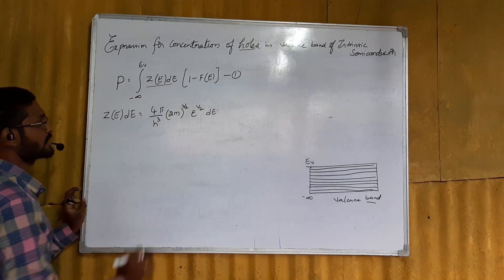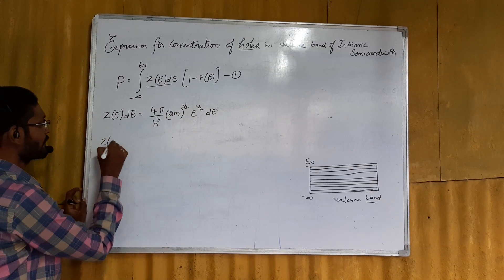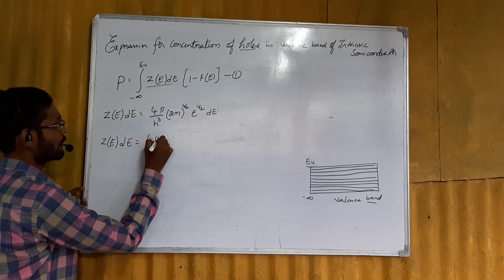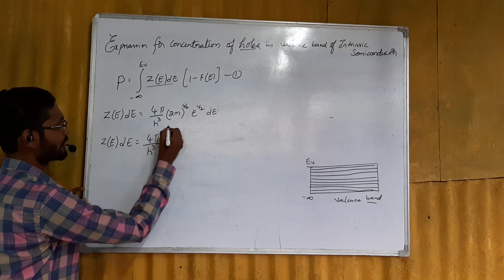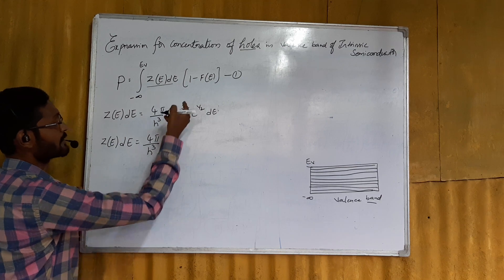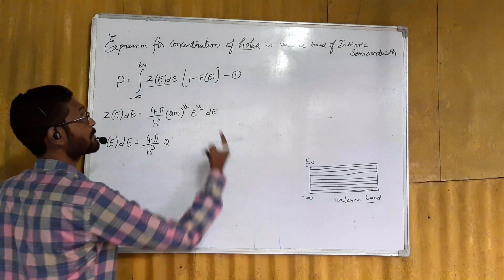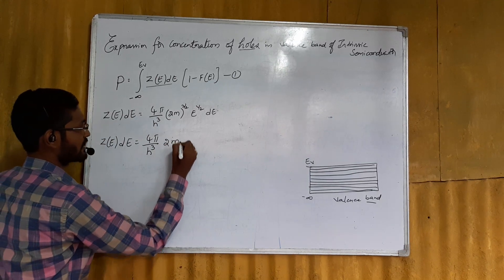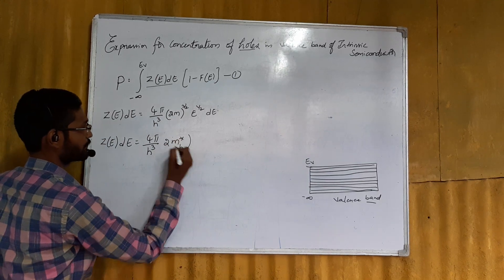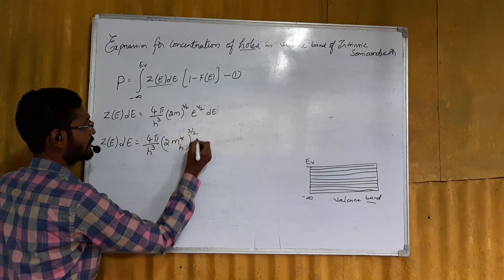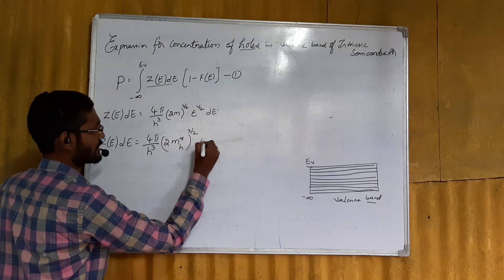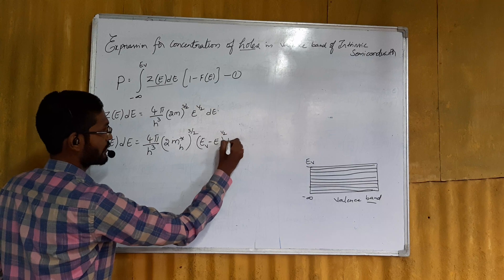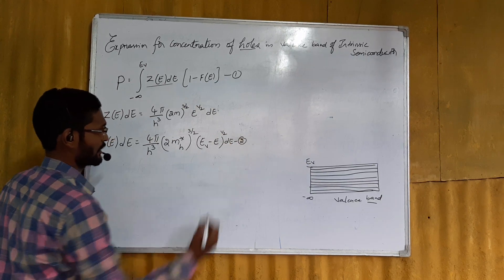Rewriting the density of states for the valence band: Z(e) de equals (4π / h³) × (2mh*)^(3/2), where m is the mass of the charged particle — in the valence band, the charged particle is the hole with effective mass mh*. The energy term becomes (Ev - e)^(1/2) de. Name this equation 2.